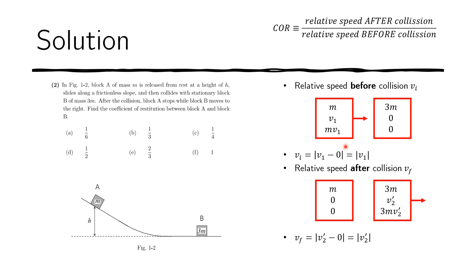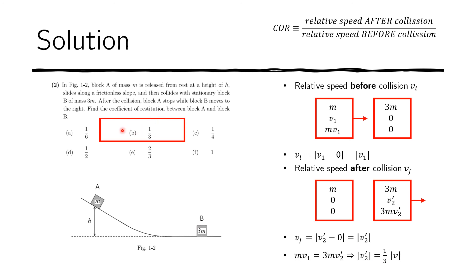From conservation of momentum, M·V1 = 3M·V2 prime. Dividing both sides by M gives V1 = 3·V2 prime, so V2 prime divided by V1 equals one third. Taking the absolute value, the ratio of the relative speed after the collision to the relative speed before is one third. Therefore, the coefficient of restitution between Block A and Block B is 1/3.